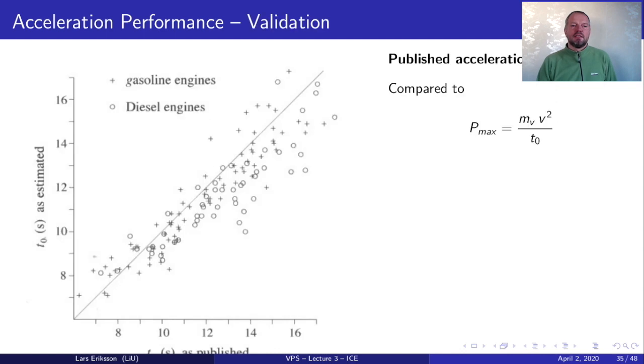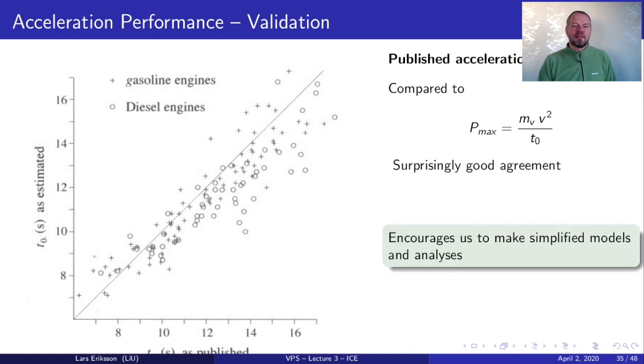Let's look at the results from this simple estimation. T zero is estimated as follows from this equation compared to the real data that is published in the data sheets for vehicles. We see that it's a surprisingly good agreement. I was surprised when I saw this agreement myself the first time considering that it's based on the simplifications. So the main message is that this encourages us to make simplified models and analysis of the performance.